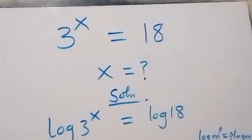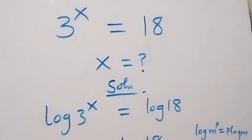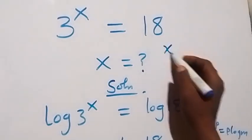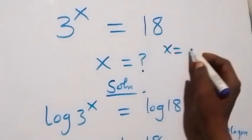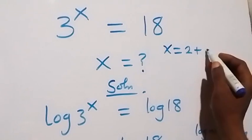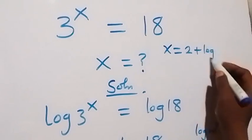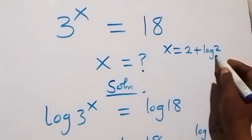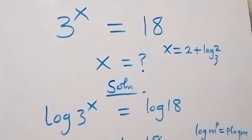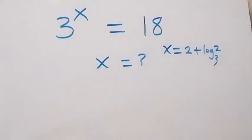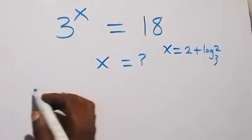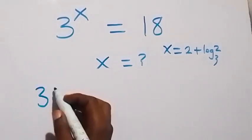Now let's check to confirm if this satisfies the given problem. That is, we got x equals to 2 plus log 2 over log 3. Then when we substitute it, it implies that this becomes 3 raised to the power (2 plus log 2 over log 3).